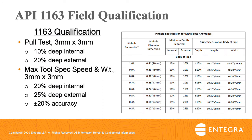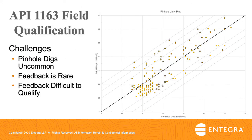Presented here is Integra's API 1163 qualified pinhole specification. Pull testing demonstrated that the ILI system could reliably, with 100% POD, detect and size 3 mm by 3 mm pinholes that are only 10% deep internally and 20% deep externally. Qualified using not only large-scale pull tests but also several hundred data points from actual field excavation activity, this pinhole spec is more conservative. The specification shown is based on the ILI system operating at its maximum wall thickness and maximum tool speed capability. As can be seen in the unity plot, one could certainly expect significantly improved performance in smaller wall thicknesses and/or at slower speeds. The outlier anomalies in this unity plot came from a high-speed gas route.